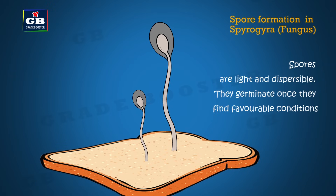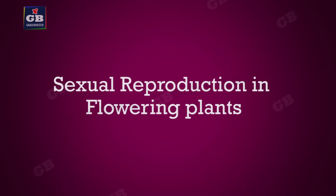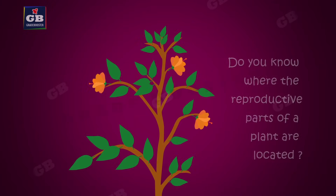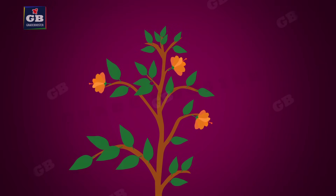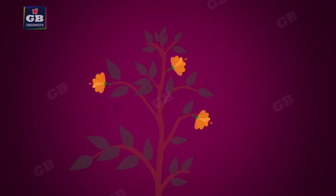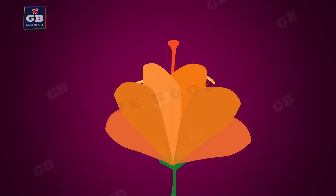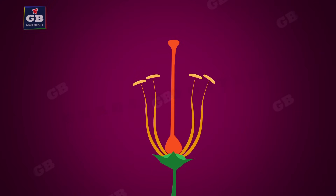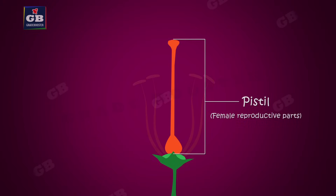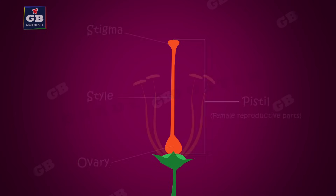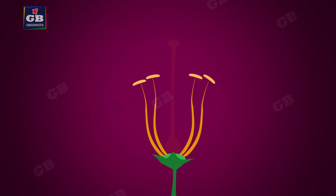Now, sexual reproduction in flowering plants. Do you know where the reproductive parts of a plant are located? The reproductive parts are located in the flower. Here is a flower — let us identify the reproductive parts. The female reproductive part of the plant is called the pistil. It has three parts: stigma, style, and ovary.